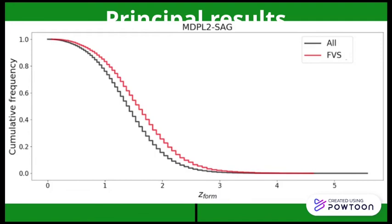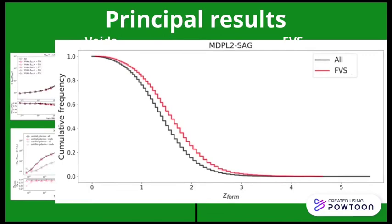The opposite is the case of FVS. Their halos show a greater cumulative frequency than the mean, so they are formed first and are older.